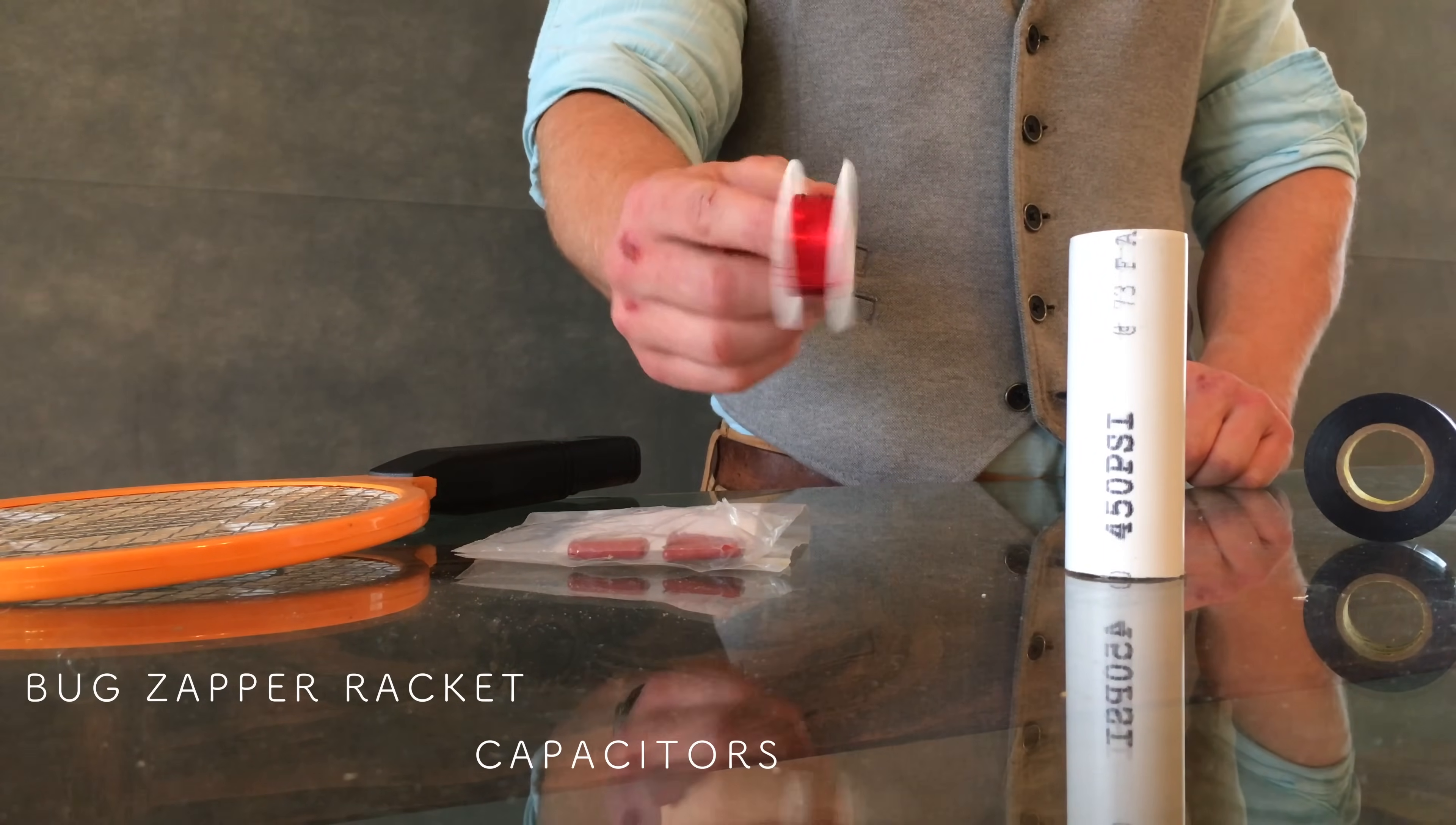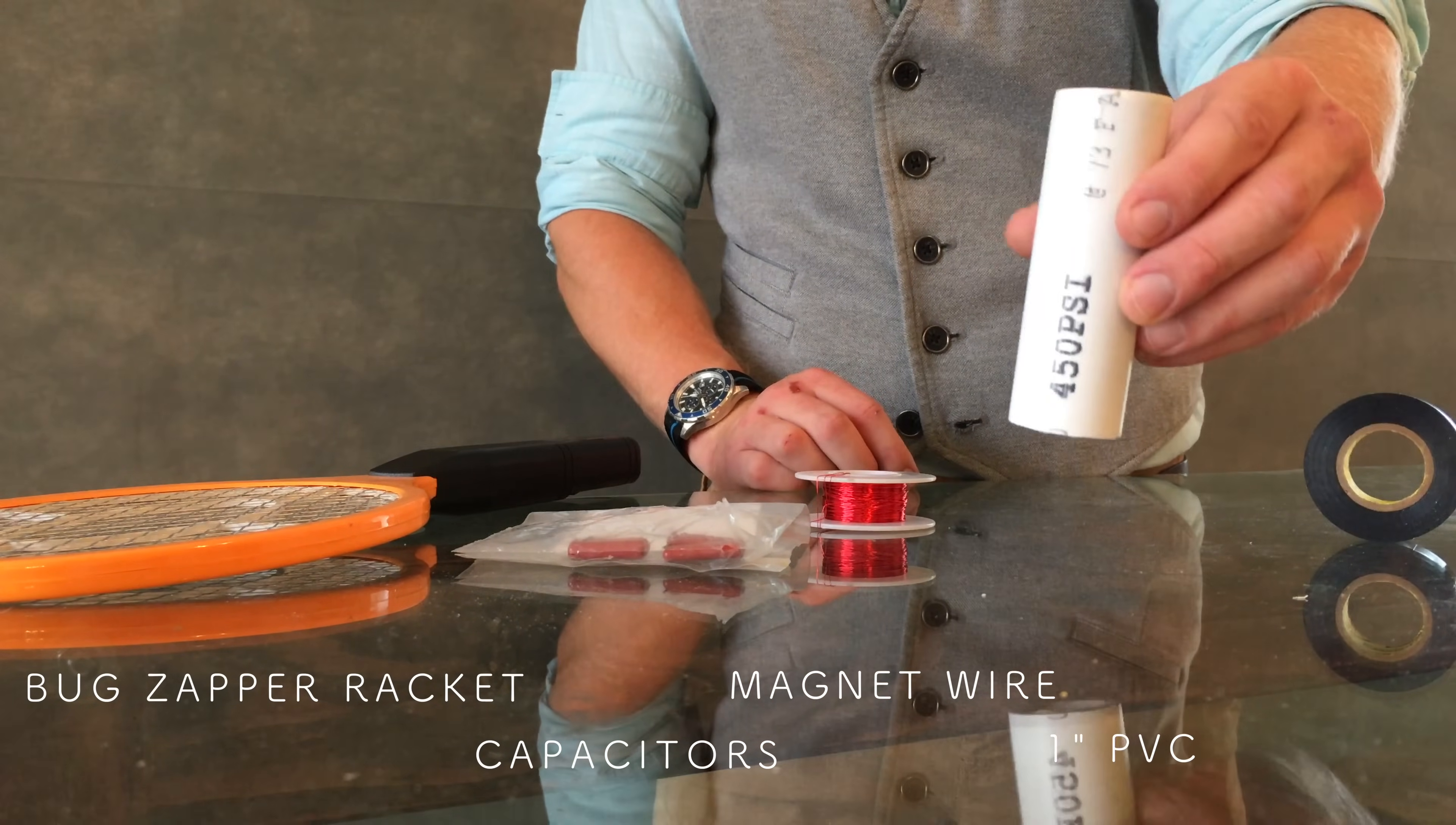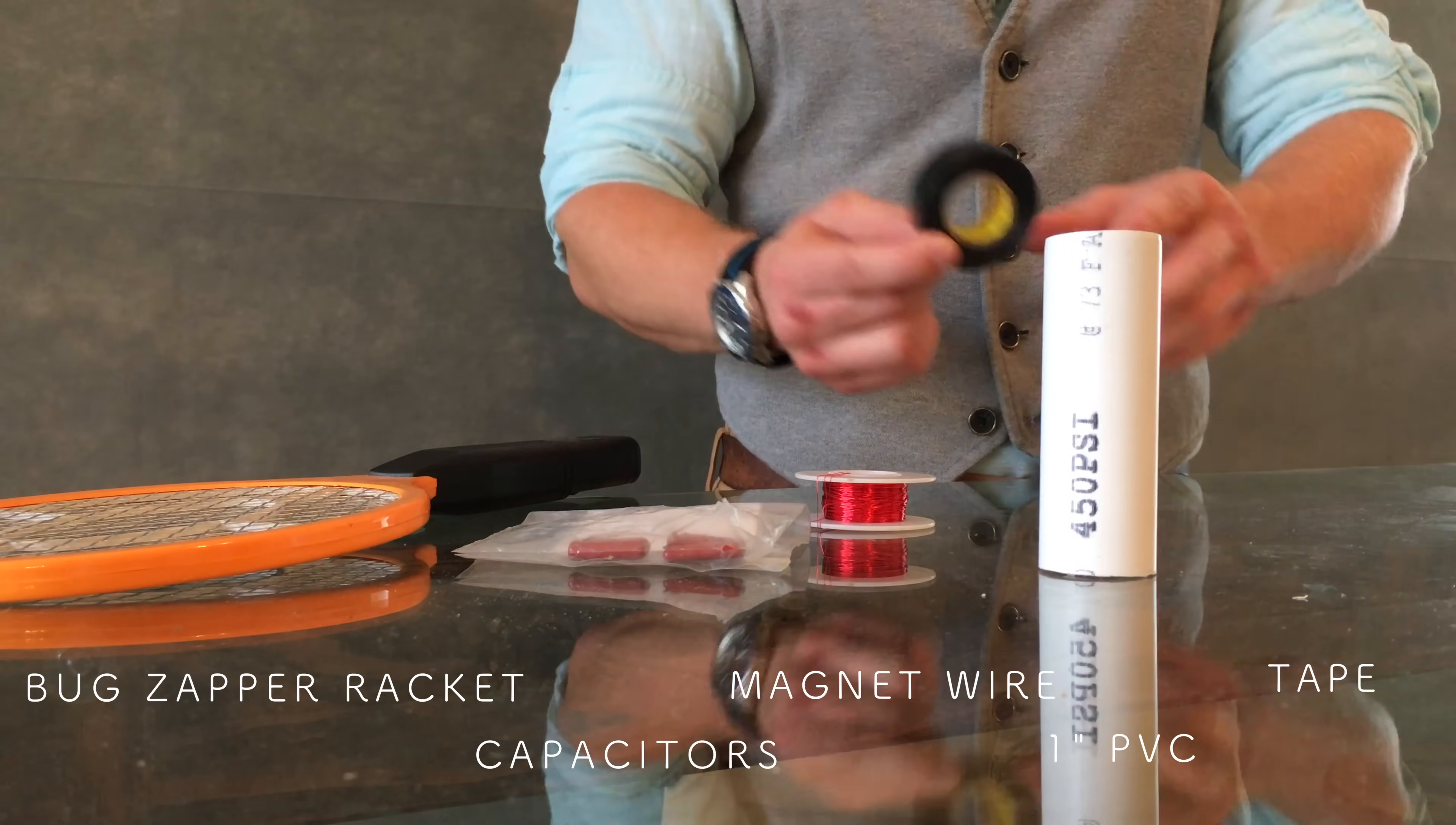You'll also need a roll of 32 gauge enamel copper wire, a 4 inch section of 1 inch wide PVC pipe, and very importantly some electrical tape. I prefer black.